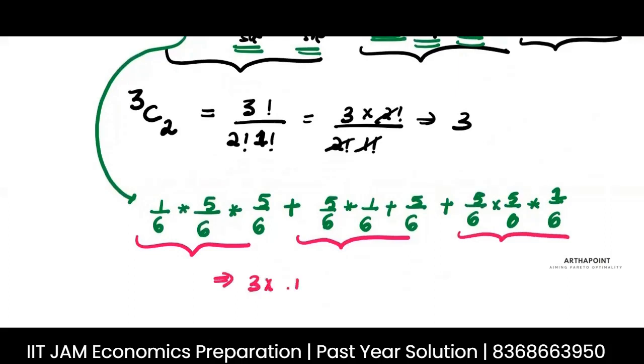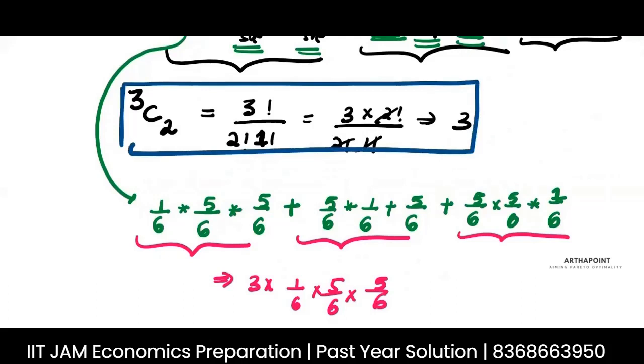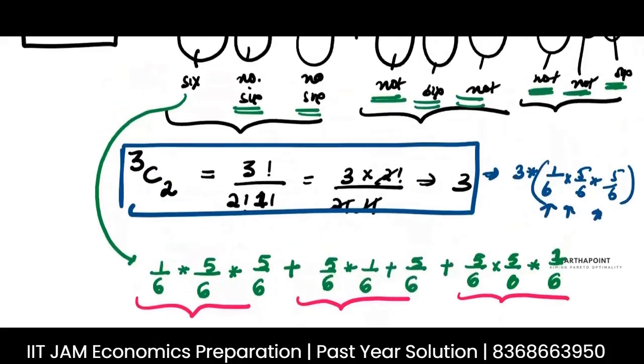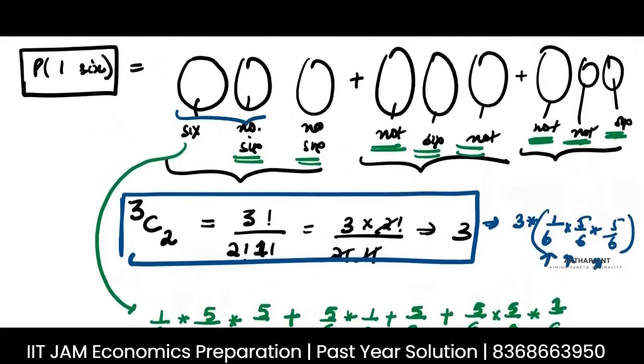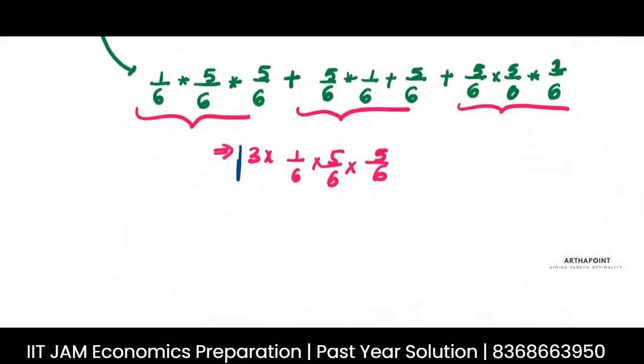So I can write this as 3 into 1 by 6 into 5 by 6 into 5 by 6. That is why this is useful. If you use the permutation method, you would know that you exactly have to multiply 3 with 1 by 6 into 5 by 6 into 5 by 6. There is one time that the dice will give you six, another two times it will not give you six.